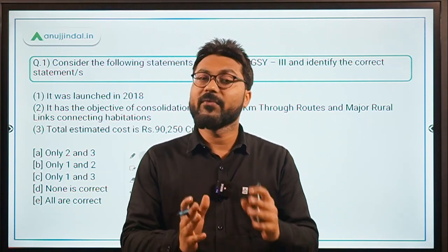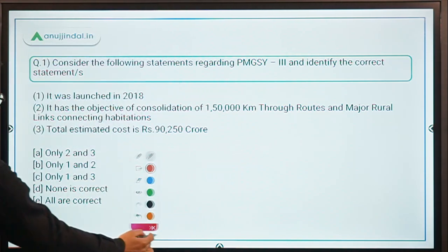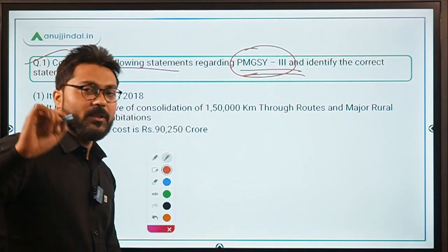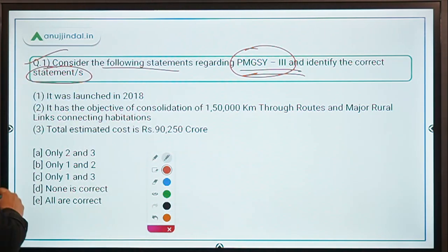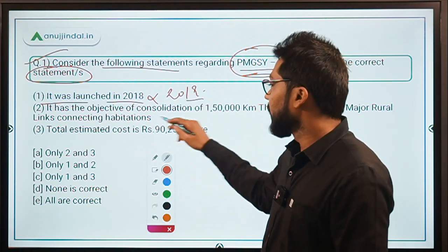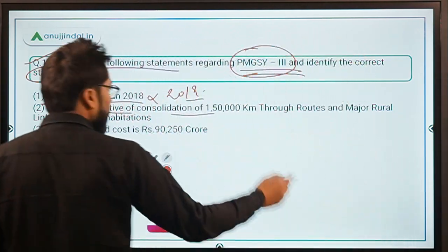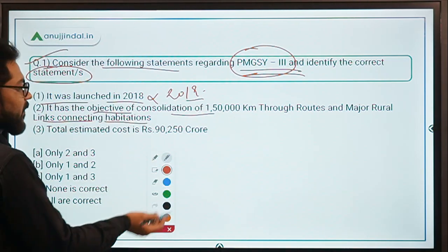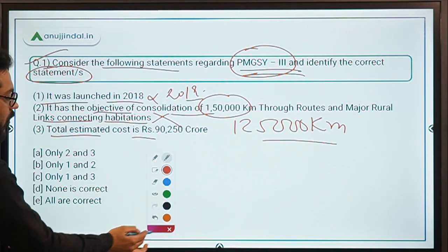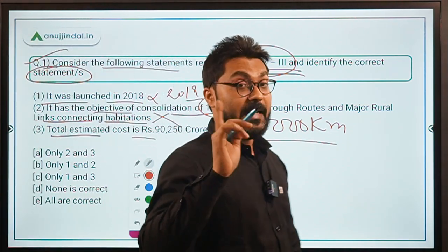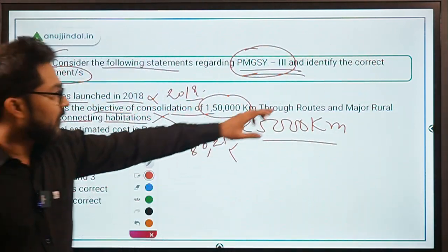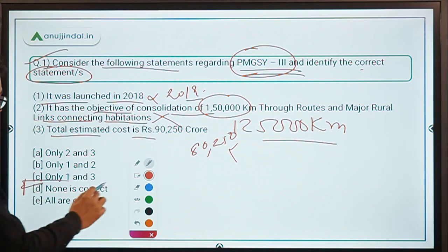Now let's move to exam questions. Question 1: Consider the following statements regarding PMGSY-3 and identify the correct statement. Statement 1: Launched in 2018 — incorrect, it was 2019. Statement 2: Objective of consolidation of 1,50,000 km — incorrect, it was 1,25,000 km. Statement 3: Total estimated cost Rs. 90,250 crores — incorrect, it was 80,250 crores. Therefore, the correct answer is option D — none is correct.